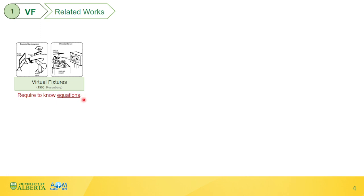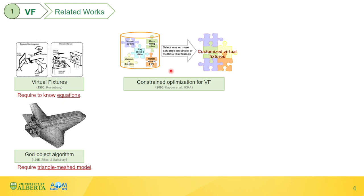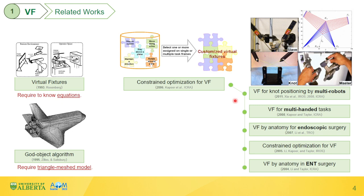For VFs with irregular shapes, generating them could be a challenge. To solve this problem, Zills and Salisbury developed a God object algorithm, which can generate VFs for objects with complex shapes like a space shuttle. This algorithm requires a triangle meshed model of the object. Kapoor and colleagues presented a constrained optimization framework for generating VF by assembling task primitives in a predefined VF library, applied to various surgical applications. This method requires knowing the geometric constraints and robot kinematics.